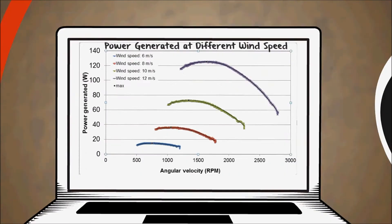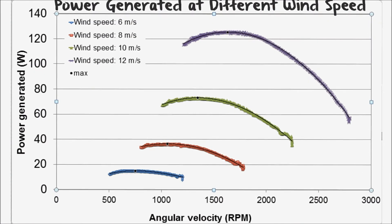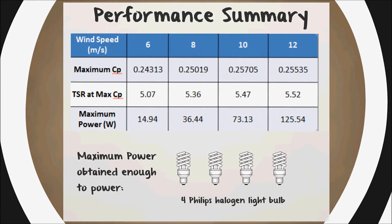Here's a summary of the wind turbine performance at different wind speeds. The graph shows how the power varies with the RPM of the turbine at each wind speed. Using the plot, we are able to obtain the maximum power at each wind speed as well as the max CP at its corresponding TSR.